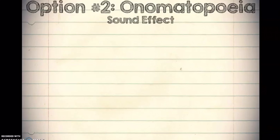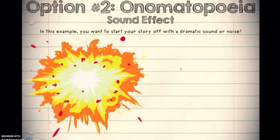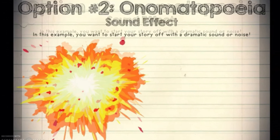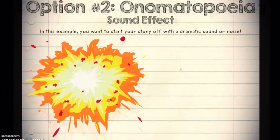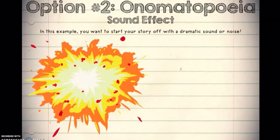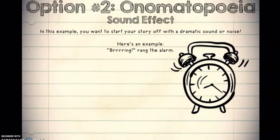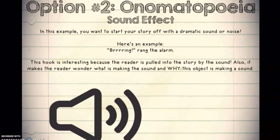The second option you could use is onomatopoeia. If you forgot what onomatopoeia is, that's where you use some sort of sound effect to start your story — some sort of noise that would get the reader's attention. So you could start with a big bang, or, as in this example, an alarm clock going off. The reader is going to want to know what's causing this sudden sound to occur, why it's making this actual noise. So you could also start your stories or your leads that way as well.